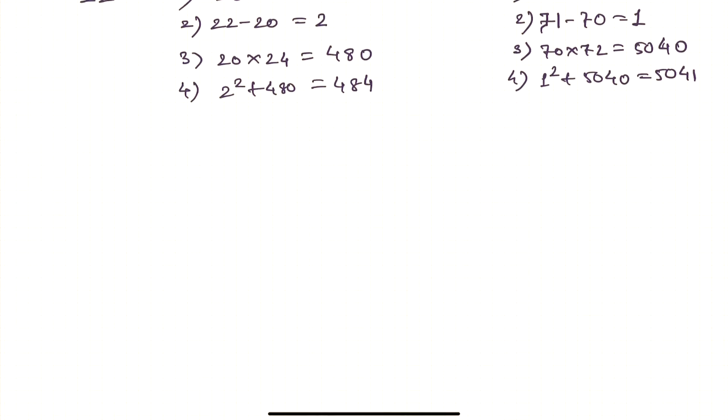Let's take some more examples. If the number is 89, I have to find out 89 square. First step, nearest multiple is 90. Then the gap is 89 minus 90 equals negative 1. Third, 90 into 88, which is nothing but 7920. Then fourth, add minus 1 square to it, which is 7921.